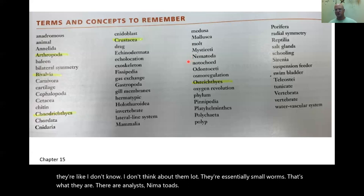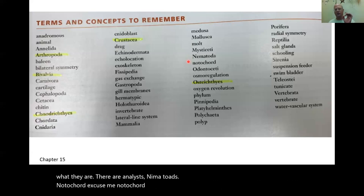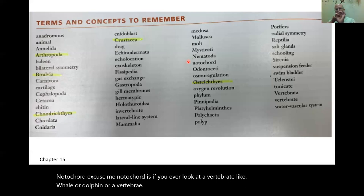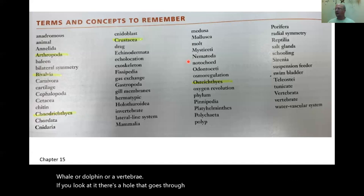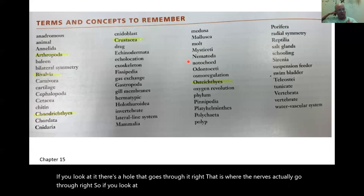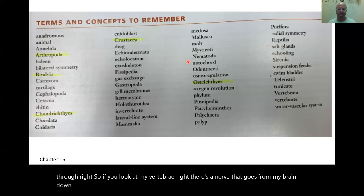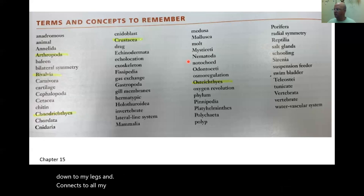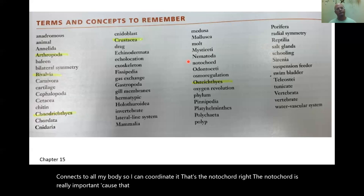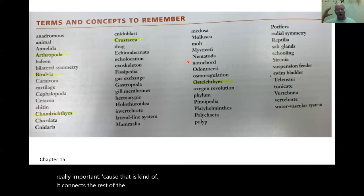Notochord — if you look at a vertebra, there's a hole that goes through it where the nerves pass. That is the notochord. It's really important because it connects the rest of the body to the brain — the control system. The nerve runs from the brain down to the legs and connects to all the body to coordinate movement.